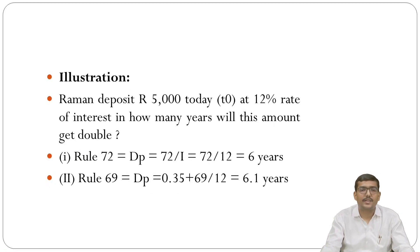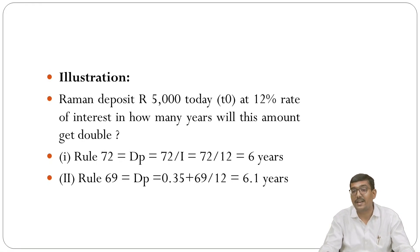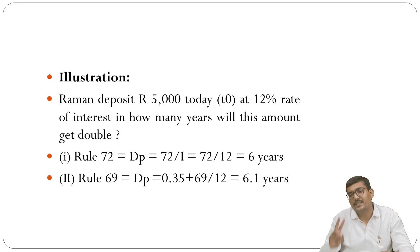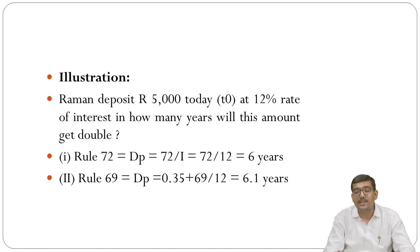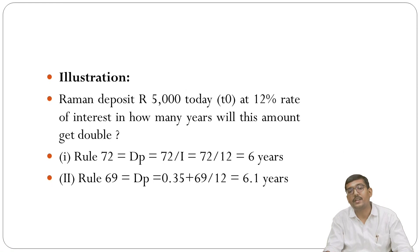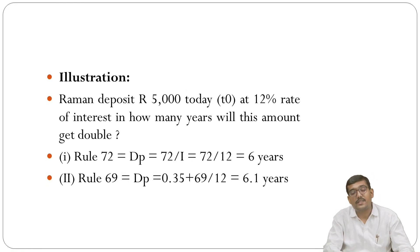Another illustration: Raman deposited ₹5,000 today at 12% rate of interest. In how many years will this amount double? When the amount needs to be doubled, there are two rules: Rule of 72 and Rule of 69. Rule 72: Doubling Period = 72 / i = 72 / 12 = 6 years. Rule 69: Doubling Period = 0.35 + (69 / i) = 0.35 + (69/12) = 6.1 years. These are the key rules for doubling time.